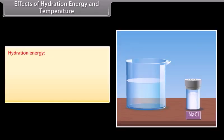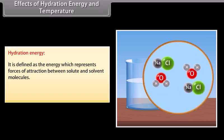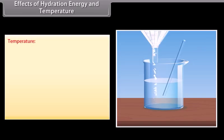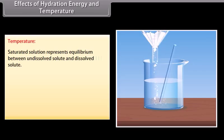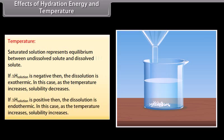Effects of hydration energy and temperature: Hydration energy is defined as the energy which represents forces of attraction between solute and solvent molecules. If hydration energy is greater than lattice energy, then solution is easily formed. Regarding temperature — saturated solution represents equilibrium between undissolved and dissolved solute. If ΔH of solution is negative, dissolution is exothermic; as temperature increases, solubility decreases. If ΔH of solution is positive, dissolution is endothermic; as temperature increases, solubility increases.